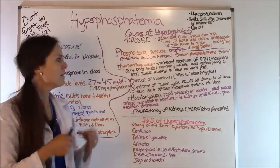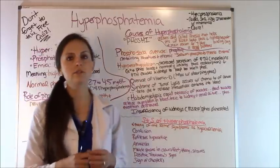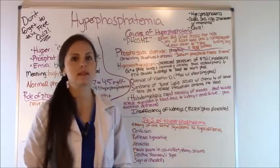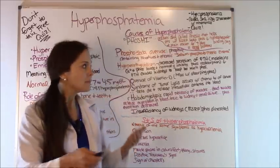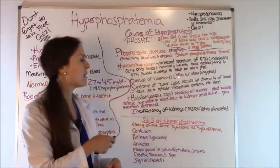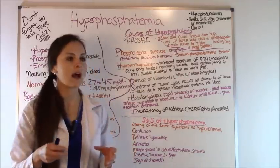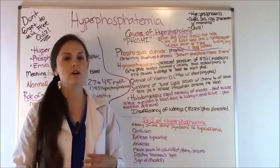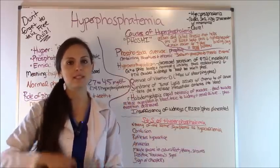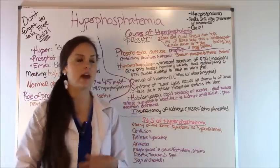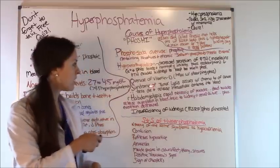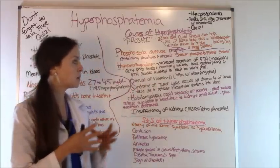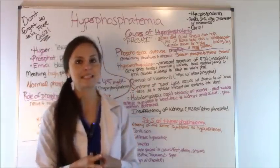O stands for overuse of vitamin D — say you took too many supplements. What happens is the body absorbs too much phosphorus because vitamin D is helping with that. S stands for syndrome of tumor lysis.